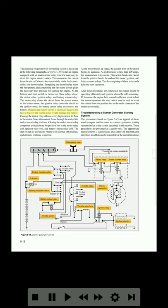Opening the battery circuit is necessary because the heavy drain of the starter motor would damage the battery. Closing the motor relay allows a very high current to flow to the motor. Since this current flows through the coil of the undercurrent relay, it closes. Closing the undercurrent relay completes a circuit from the positive bus to the motor relay coil, ignition relay coil, and battery cutout relay coil. The start switch is allowed to return to its normal off position, and all units continue to operate. As the motor builds up speed, the current draw of the motor begins to decrease. As it decreases to less than 200 amps, the undercurrent relay opens. This action breaks the circuit from the positive bus to the coils of the motor, ignition, and battery cutout relays.